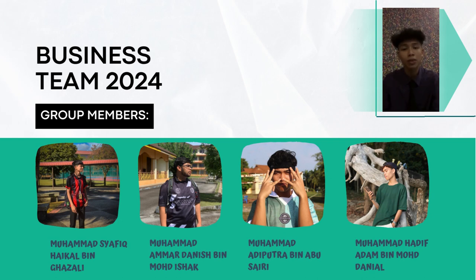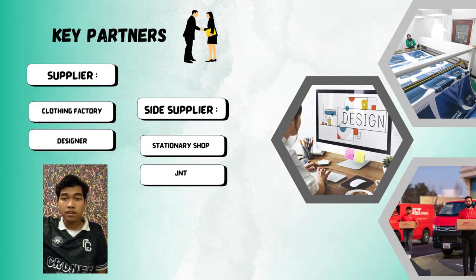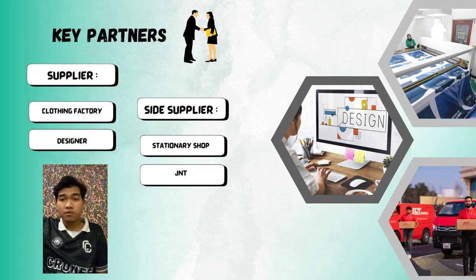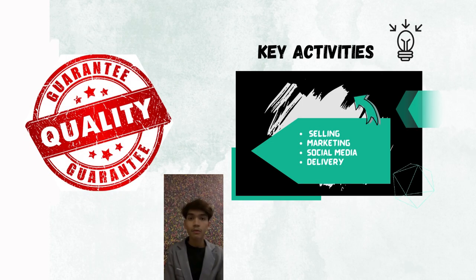Our group is from DPW2A. The first element is the key partners. We are working together with the clothing factory to get stock, a supplier of product, the designer, and last, GNT service to post our items.